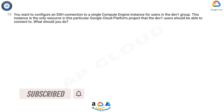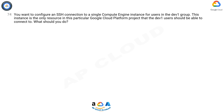You want to configure an SSH connection to a single Compute Engine instance for users in the Dev1 group. This instance is the only resource in this particular Google Cloud Platform project that the Dev1 users should be able to connect to. What should you do?